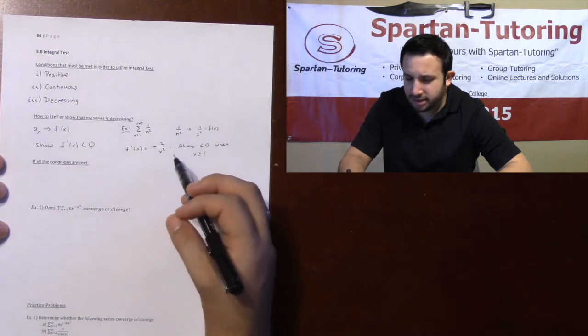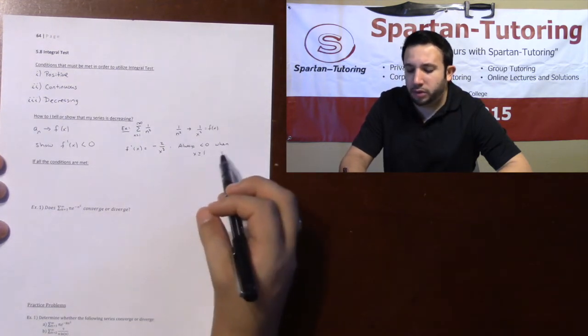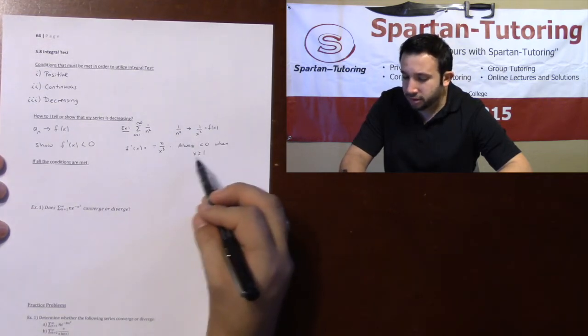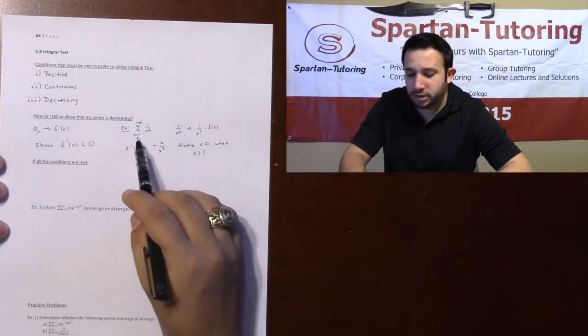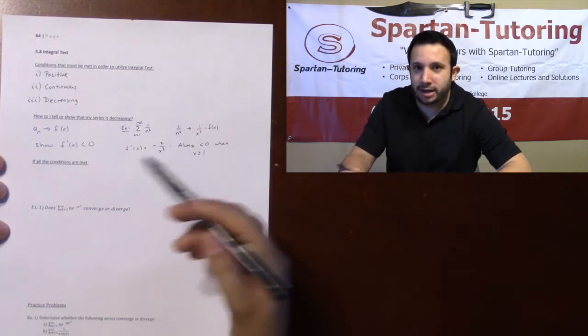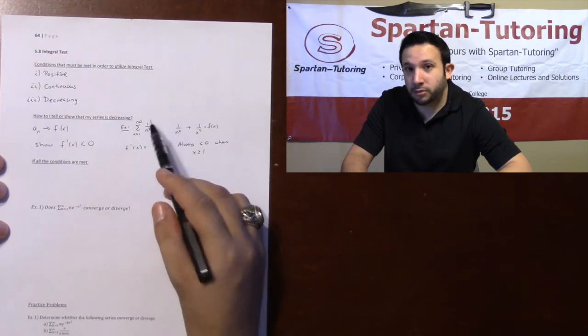It's very easy to see that this derivative will always be negative whenever x is greater than or equal to 1. Why do I care about greater than or equal to 1? Because those were the limits of my series. I don't care what's going on when n is negative 5, because I'm only looking between 1 and infinity.